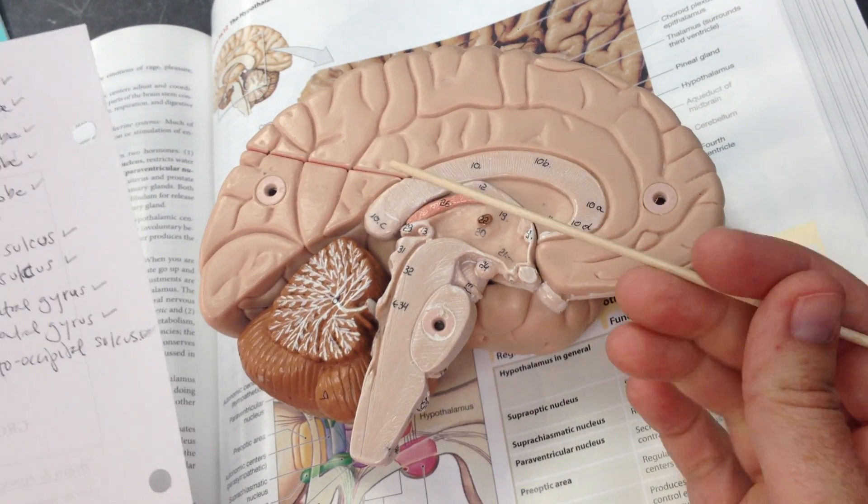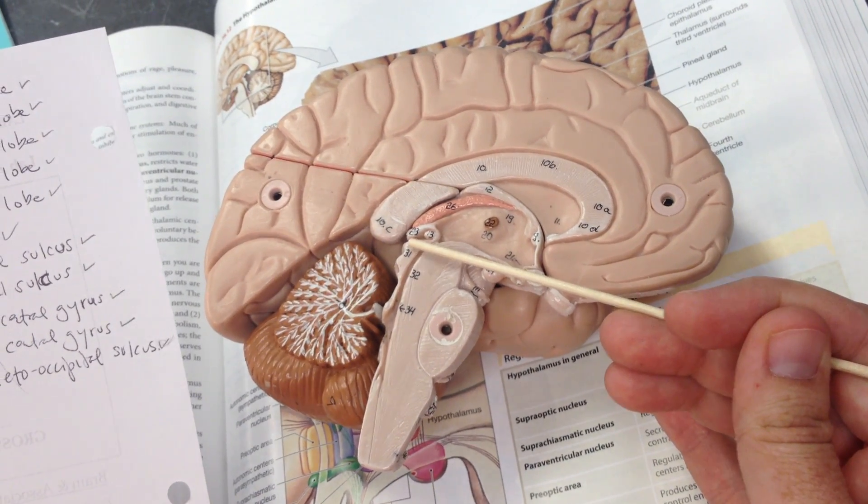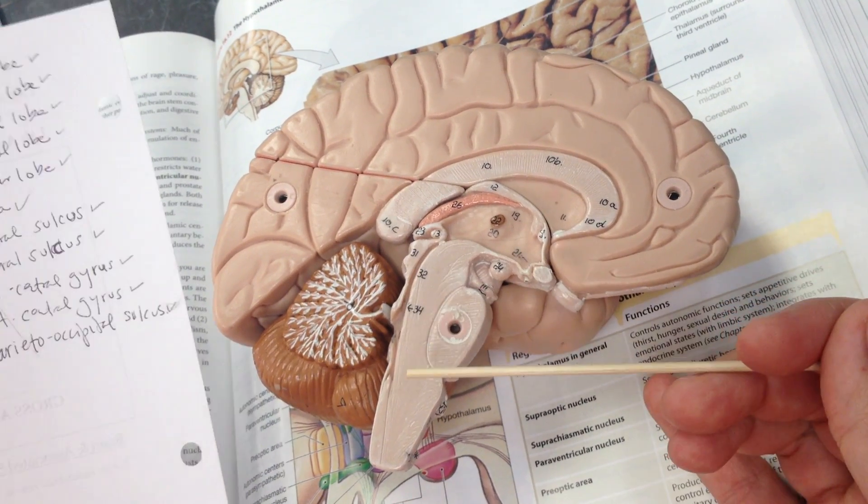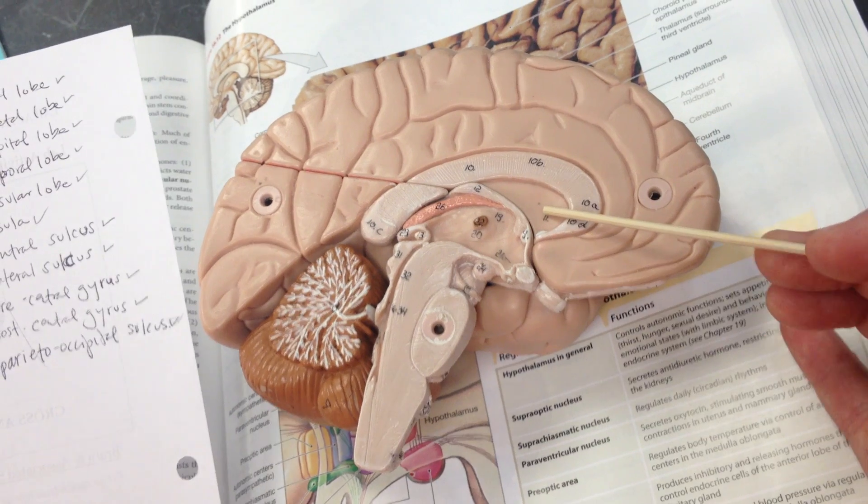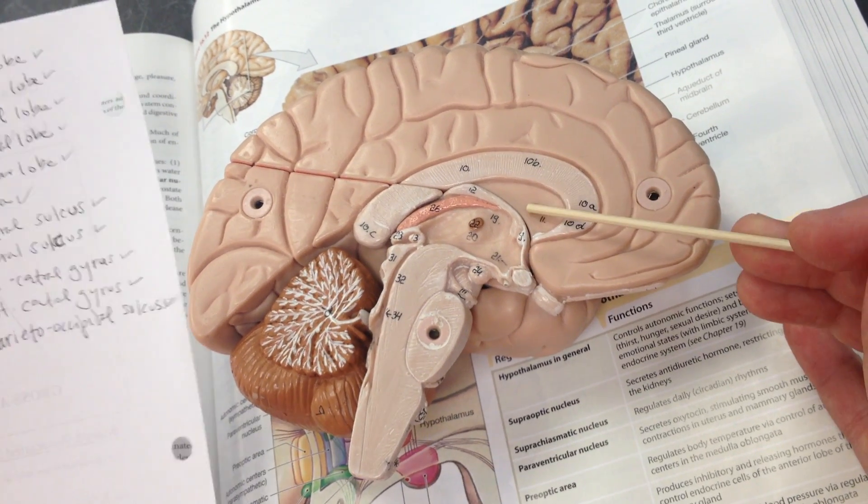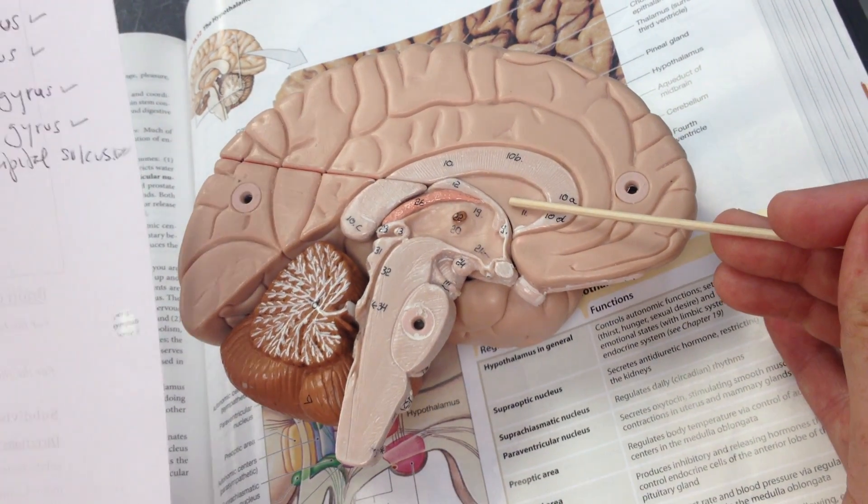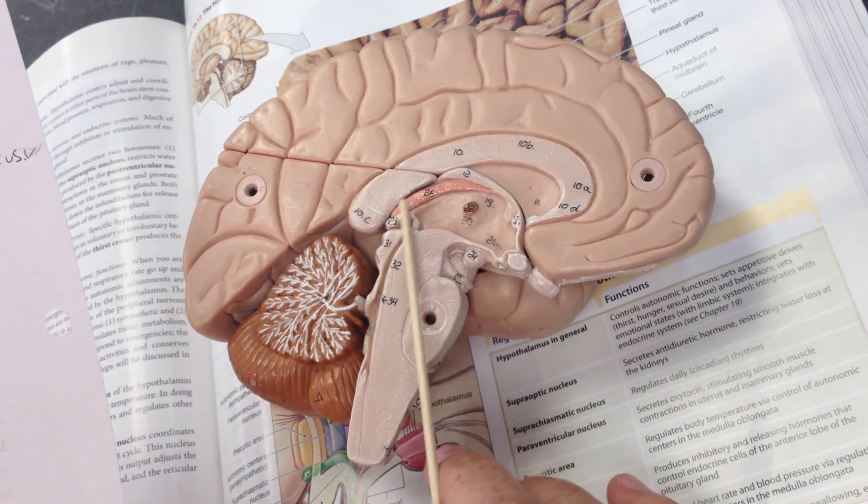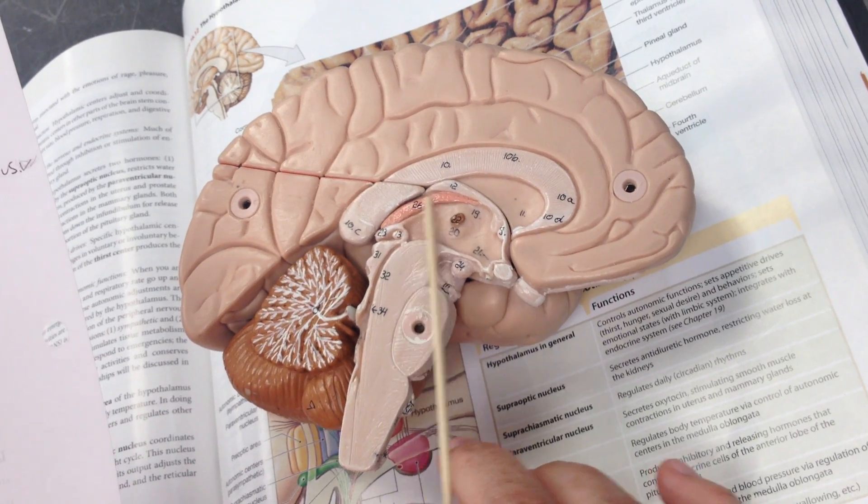The superior colliculi and the inferior colliculi, the septum pellucidum, and under there is the lateral ventricle, and then the choroid plexus. This is the choroid plexus of the epithalamus.